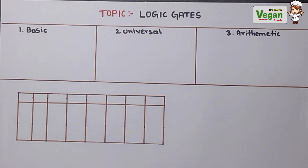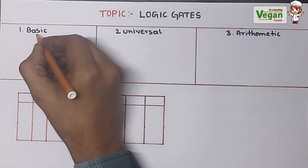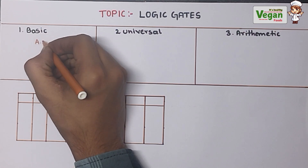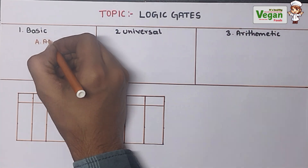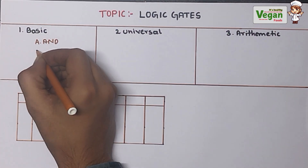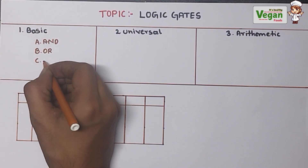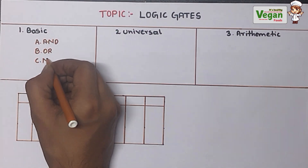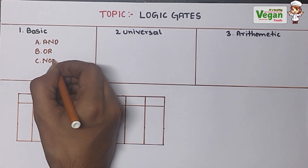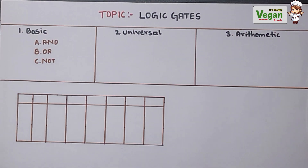In the basic type of logic gates, we have three types. First one is AND gate, second one is OR gate, and third one is NOT gate.